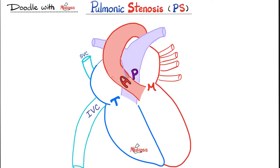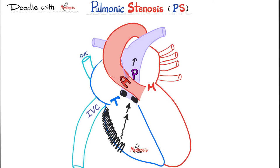In pulmonic stenosis, the pulmonic valve is narrow and has difficulty opening. When deoxygenated blood tries to pass from the right ventricle to the pulmonary trunk, it encounters difficulty. This stenosis increases the afterload — pressure overload — on the right side. Therefore, the right side will react and respond by undergoing hypertrophy. Since this is pressure overload, it's going to be concentric right ventricular hypertrophy. We expect to hear an S4 gallop rhythm thanks to the pressure overload.